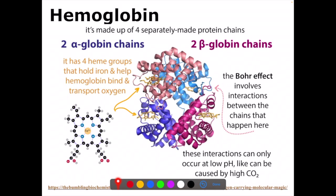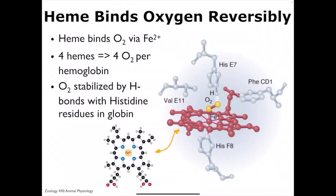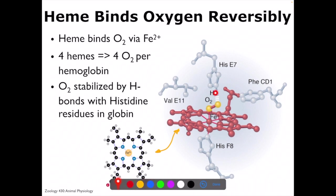So here you can potentially bind up to four O2 molecules. The Bohr effect involves an interaction between the chains that happens in these heme pockets. They can occur only at low pH, like what is caused by high CO2 or activity. Heme binds oxygen reversibly — it's not a permanent bond. Its oxygen is stabilized by bonds with histidine residues in the globin pocket.